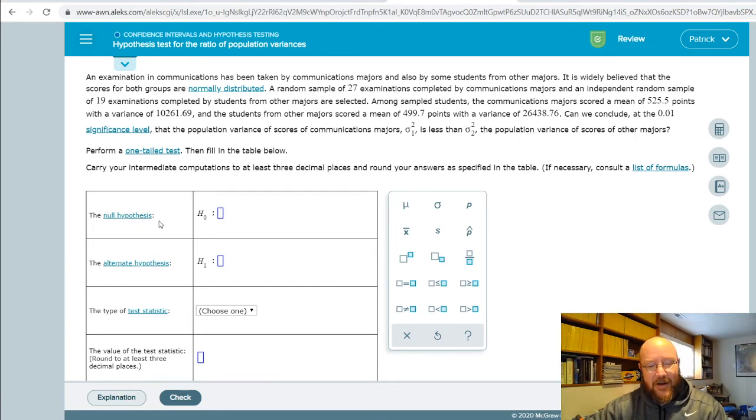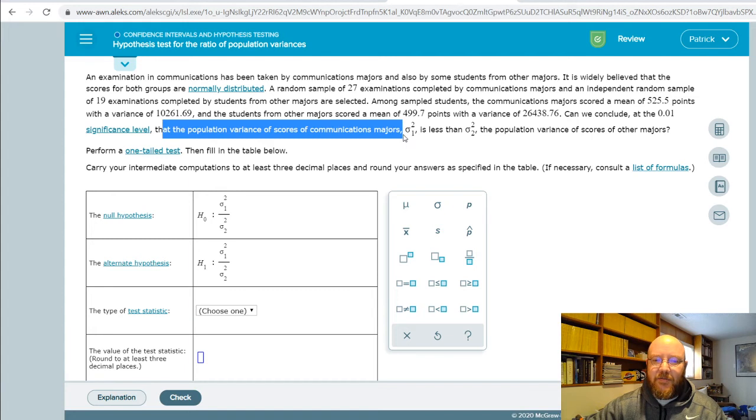So we're gonna do the exact same thing. We're just gonna make sure that we read this problem really carefully to pick out the information that we need. So our hypotheses are always gonna be ratio. So if you were smart and left that in your clipboard, you can just do a control V right there. And so we can jump right to the conclusion. Can we conclude at the 0.01 significance level that the population variance of communication measures is less than the population variance of population one is less than.